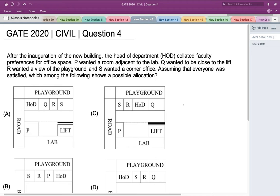Hello everyone, this is a question asked in GATE 2020 Civil Engineering Set 2. After the inauguration of the new building, the head of the department collated faculty preferences for office space. P wanted a room adjacent to the lab, Q wanted to be close to the lift, R wanted a view of the playground, and S wanted a corner office. Assuming that everyone was satisfied, which among the following shows a possible allocation?